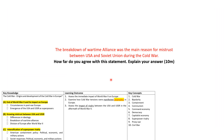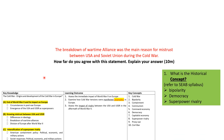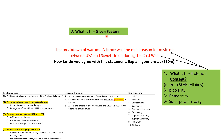We are looking at the breakdown of wartime alliance, focusing specifically on how we unpack it. The first thing we do is identify the historical concept. We are talking about mistrust and cold war. The key concept is cold war, and mistrust is attributed to bipolarity — the differences between the USA and the Soviet Union.